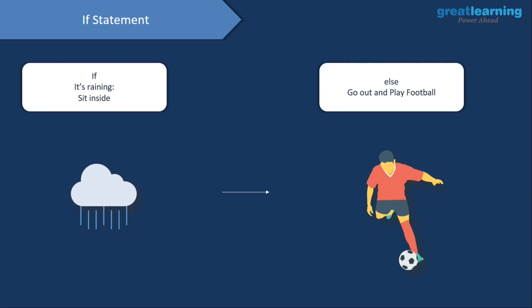We'll understand about flow control statements in Python. In flow control statements, we'll have decision making statements and looping statements. We'll start off with decision making statements. As you can get from the name itself, decision making statements would help us to make a decision on the basis of a condition.